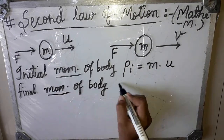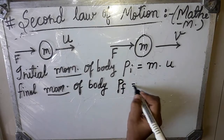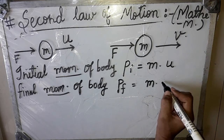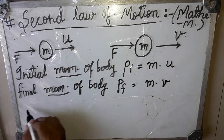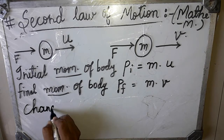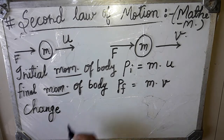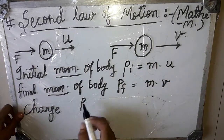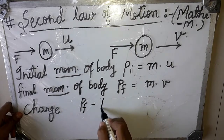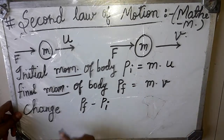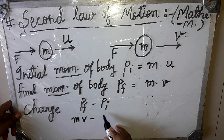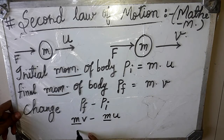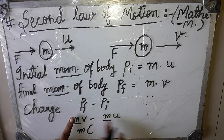For the final position, the final momentum pf equals mass into final velocity v. The change in momentum is final minus initial: pf minus pi equals mv minus mu. Taking mass m as common, the change in momentum equals m into (v minus u).